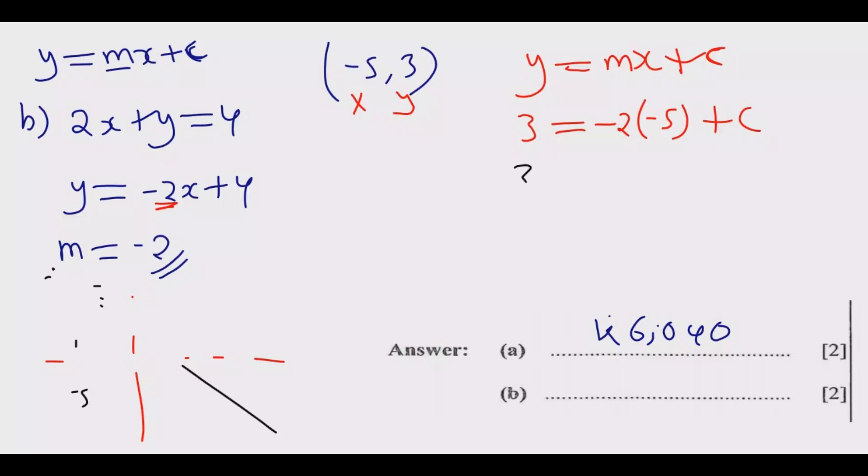We're looking to find the value of c. We have 3 = 10, because -2 times -5 is 10. You need to be careful here - this is why a lot of people mess up. Multiply that, plus c. What we need is c.